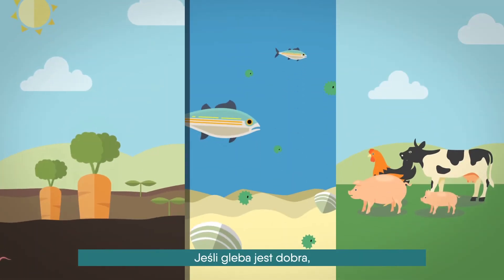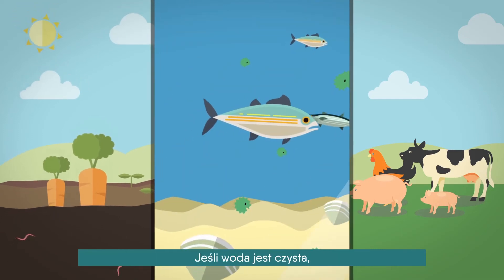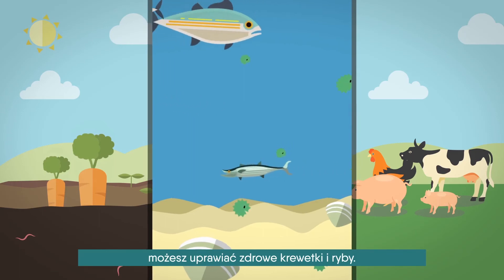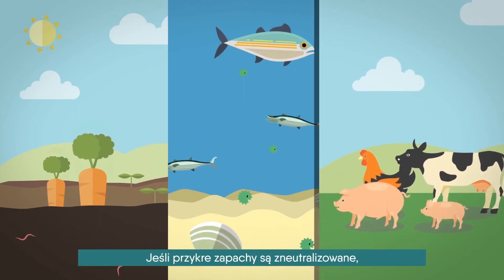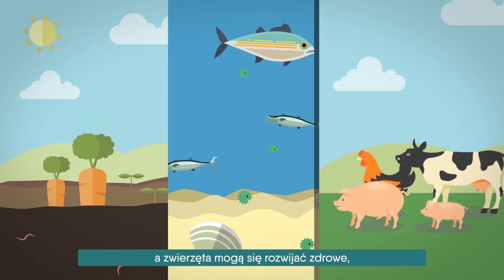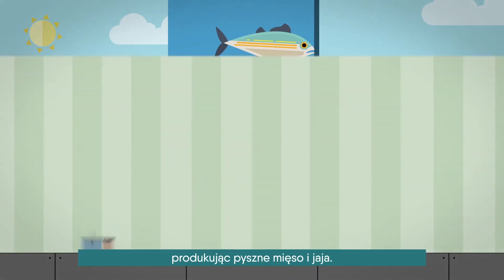If the soil is good, you can grow safe and delicious vegetables. If the water is clean, you can grow healthy shrimp and fish. If odors are reduced, the barn environment will improve and livestock can grow up healthy, producing delicious meat and eggs.